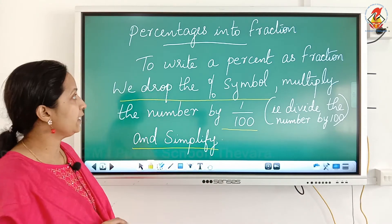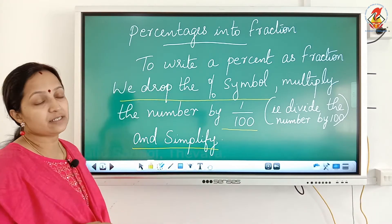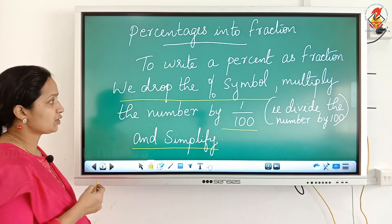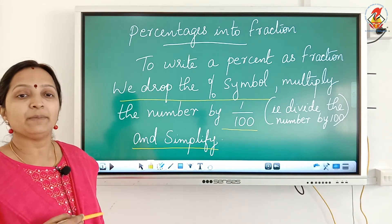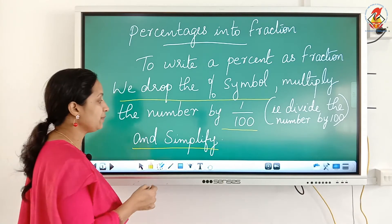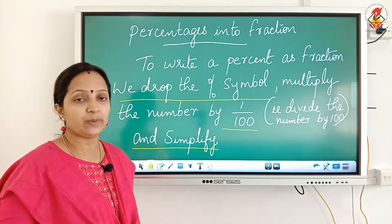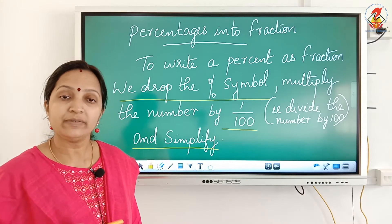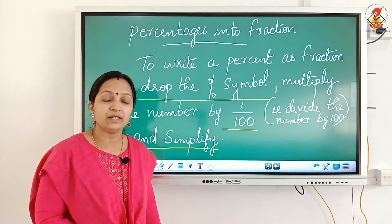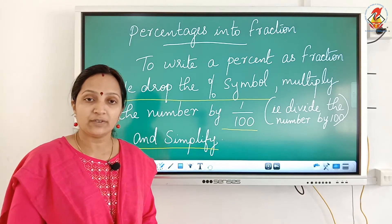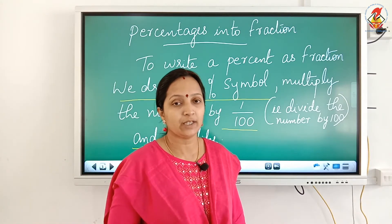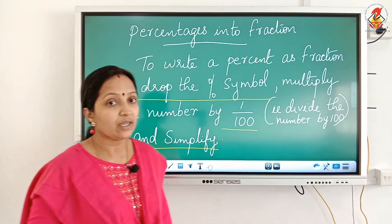I hope it is clear. If you want to convert percentages into a fraction, just drop the percentage sign and multiply the number by 1 by 100, and simplify — that means reduce the fraction to its lowest term. We reduce the fraction to its lowest term by finding the HCF of the numerator and denominator and dividing by that HCF to get the lowest term.